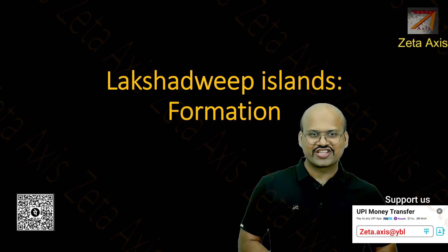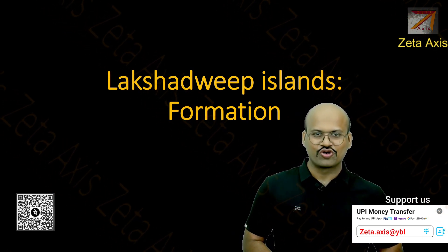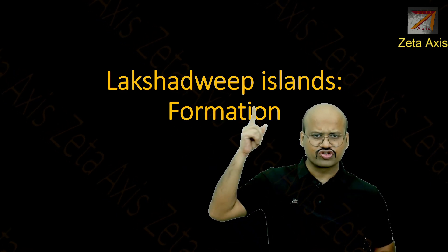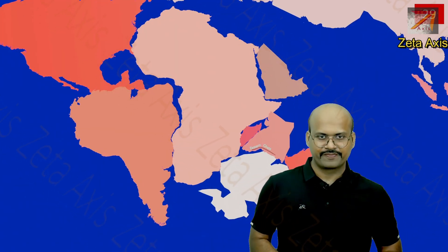Hello friends, welcome to another video of Zetaxis. Today we are going to discuss the process of formation of Lakshadweep Islands. We know that Lakshadweep Islands are a group of islands located on the western coast of India near Karnataka. These are the group of Lakshadweep Islands which we can see. Now let's try to understand how these islands were formed.